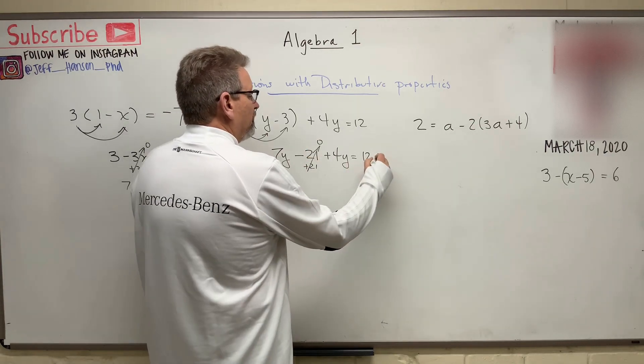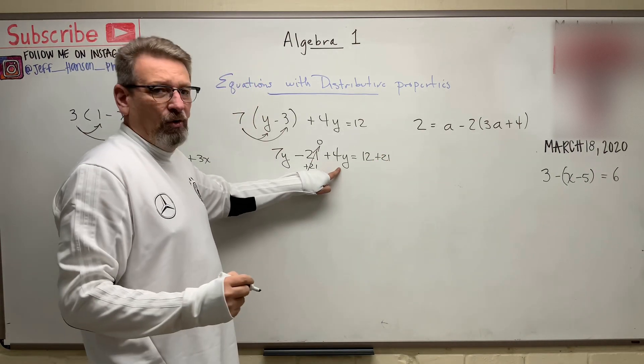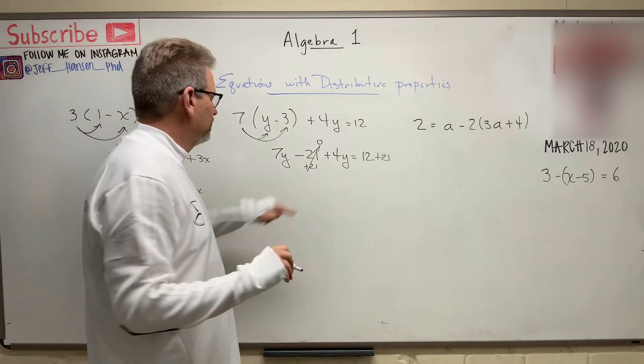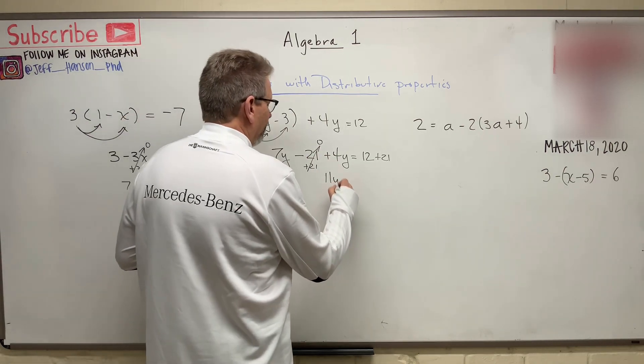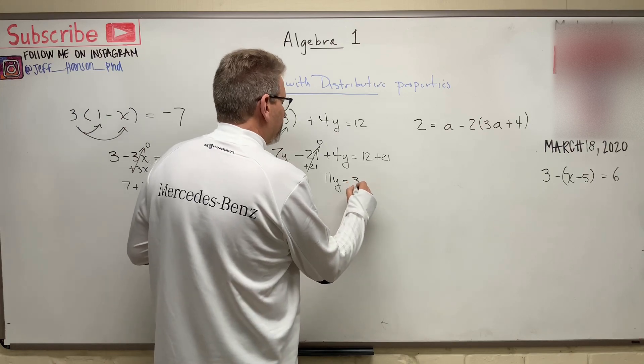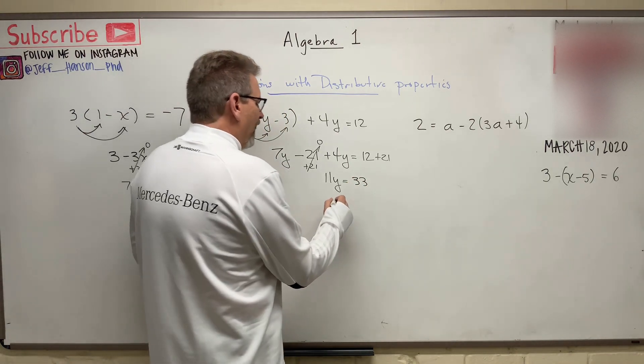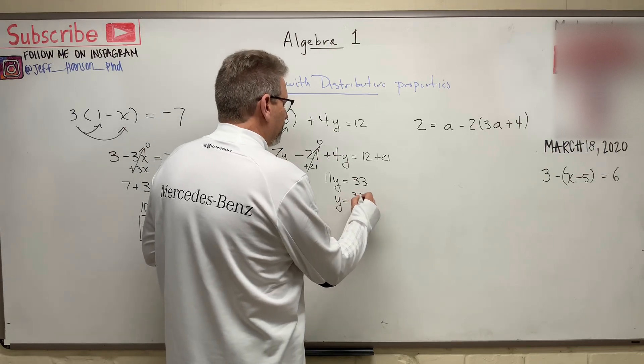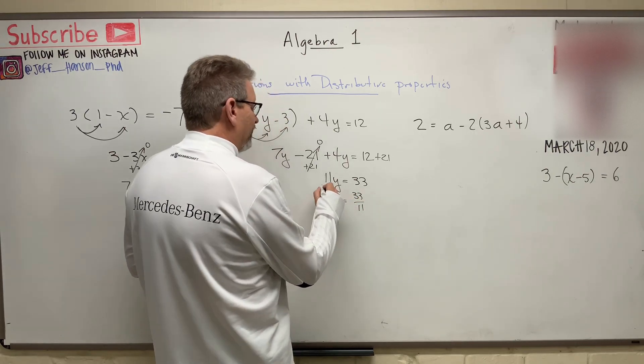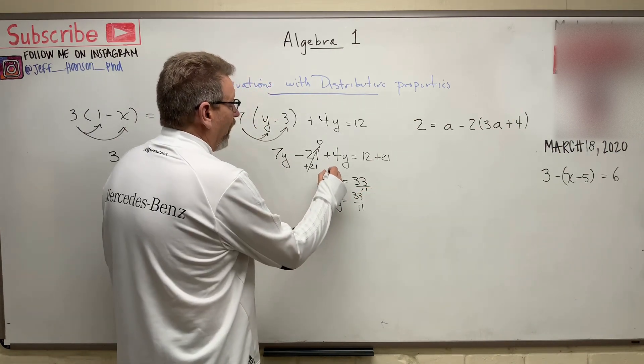Plus 21, plus 21. And then seven y plus four more y's is how many y's? 11y is equal to 12 plus 21 is 33. Ooh, that's cool. So y is equal to 33 divided by 11. I'm going to divide this side by 11, divide that side by 11. This, of course, turns into one.